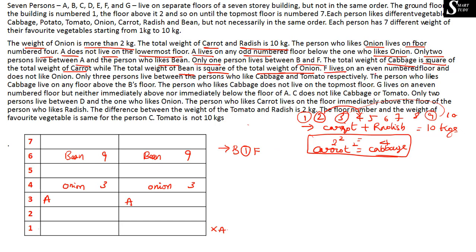F lives on an even-numbered floor and does not like onion. Even floors are 2, 4, and 6, but since onion is on floor 4, F cannot be on floor 4. So F is on floor 2 or floor 6. Applying the clue that only one person lives between B and F, B is placed one floor away from F in each scenario.